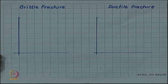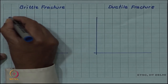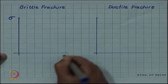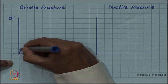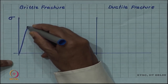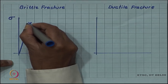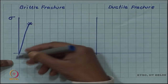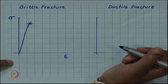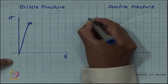Let us see this in terms of a stress-strain diagram. In the case of brittle fracture, since there is no plastic deformation, fracture will happen in the elastic regime itself. So the fracture point occurs at the end of a straight-line elastic region.